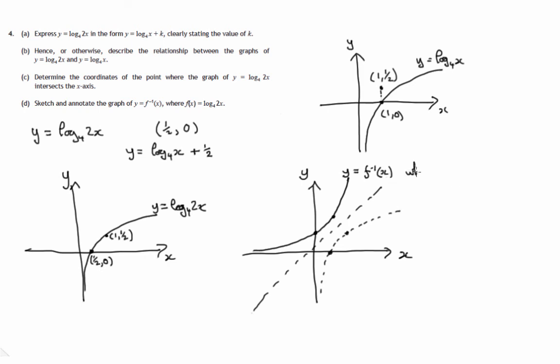Now we need to annotate it. Since we know this is the point half 0, this will be the point 0 a half. Since we knew this is the point 1 a half, this will be the point a half 1. The roles of x's and y's are swapped round. So there's the required inverse graph with two points given on it.